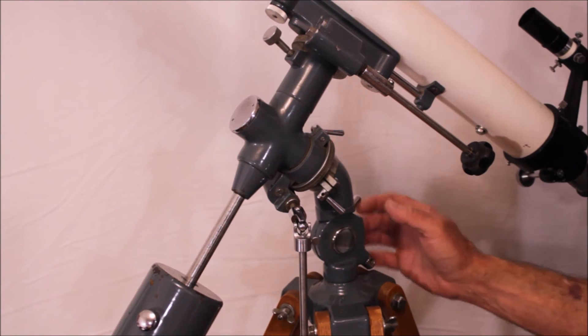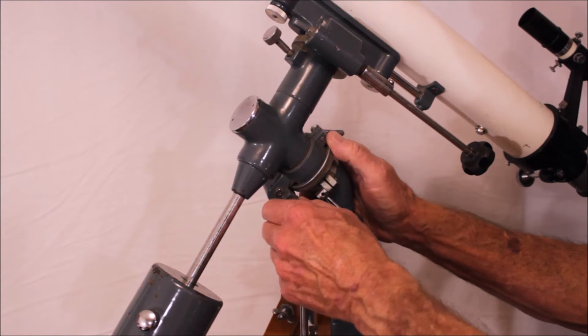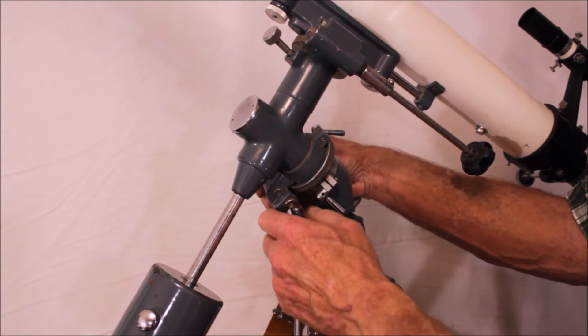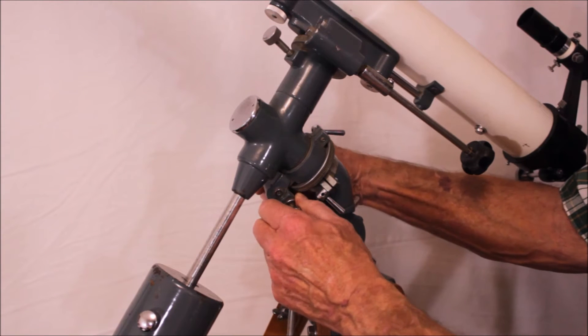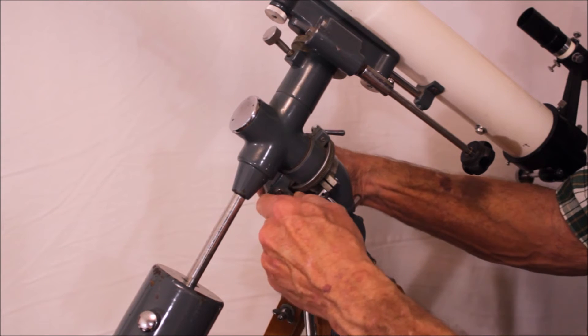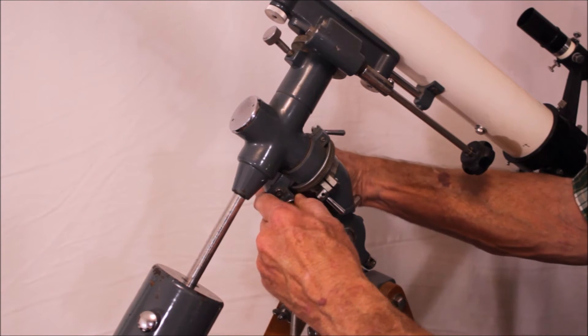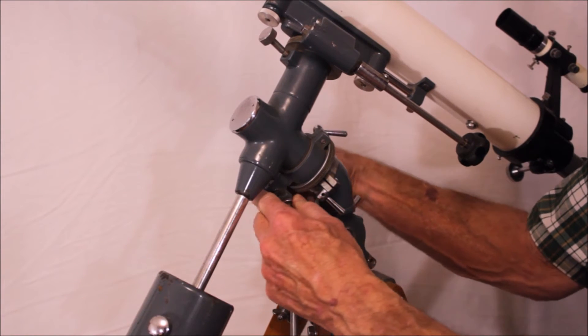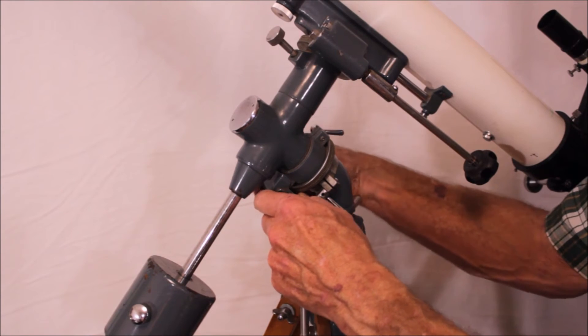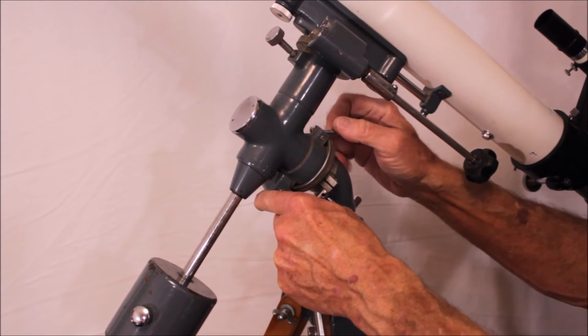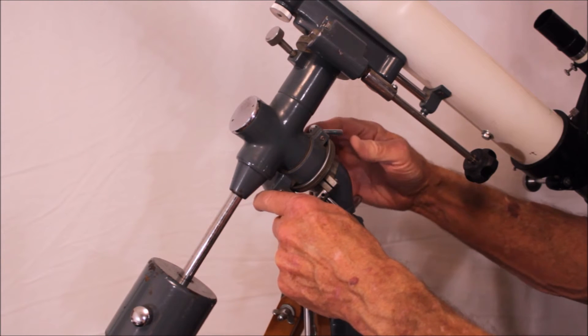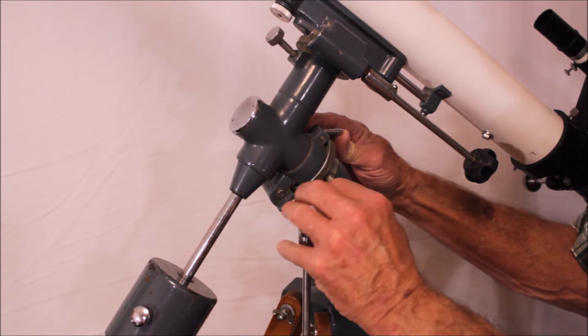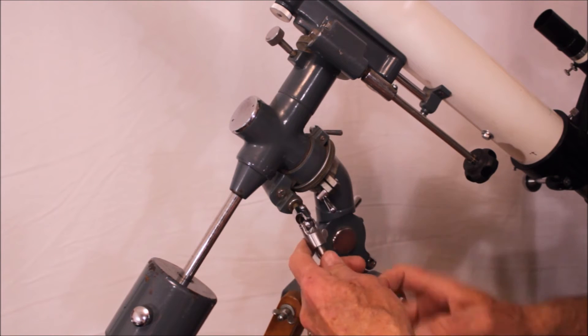Let me show you this very strange right ascension and declination worm and worm gear system. First of all, I'm not sure if you can tell, but that's spring loaded. So what's going on is there's a little tiny spring in there somewhere. You can probably see it. Anyway, when I unload it, you can move the worm gear around the worm wheel freely.